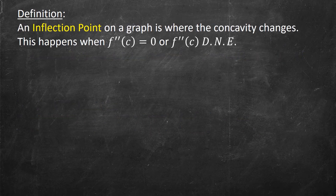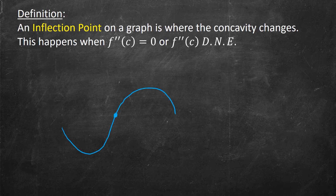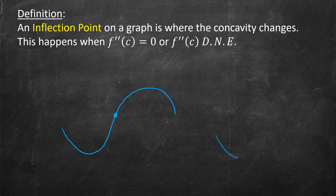Another scenario can happen, which is when the concavity changes. Imagine coming along concave up and then it switches and becomes concave down. At this particular point in the middle, it switches from concave up to concave down — this is referred to as an inflection point. An inflection point can happen in one of two cases: one where the second derivative is zero and changes sign from one side to the other, and the other case is when the second derivative simply does not exist — for instance, if the curve went completely vertical at a point, giving a vertical tangent there.